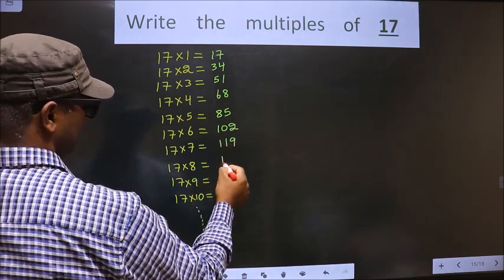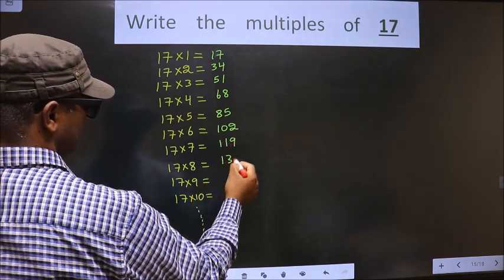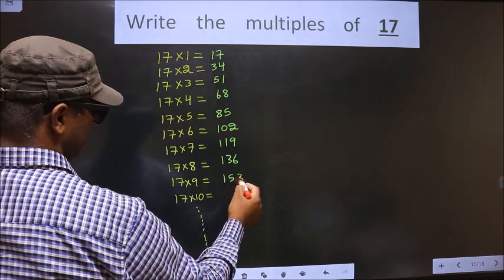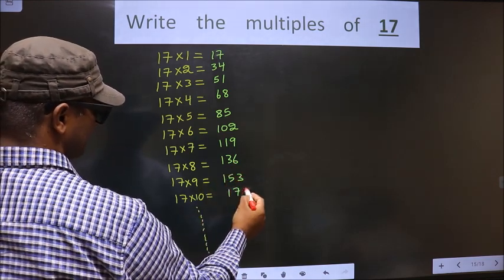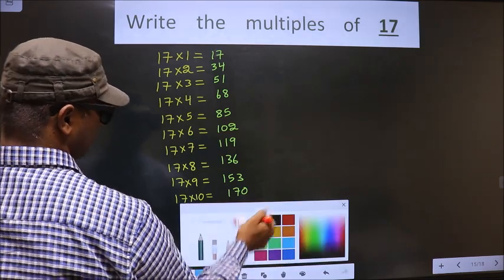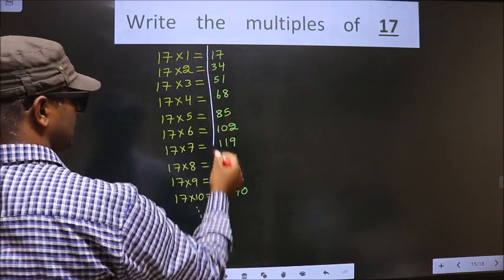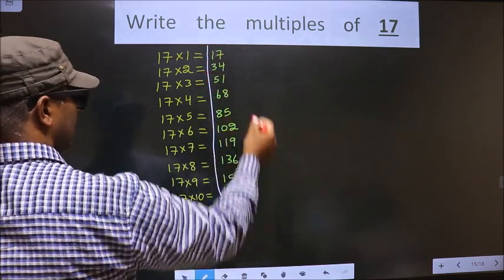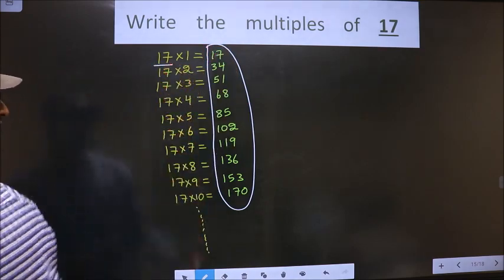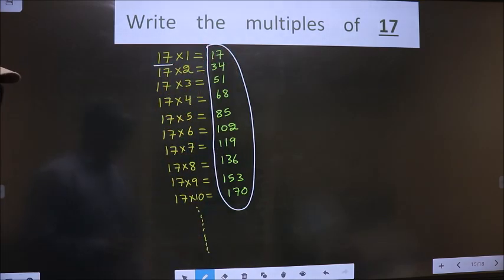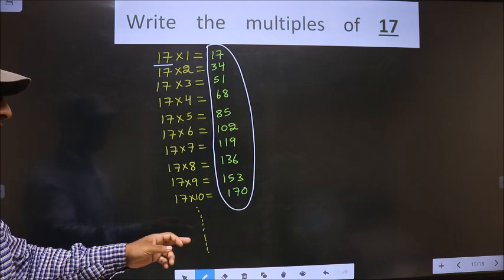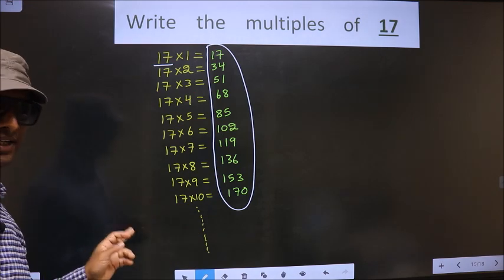17 into 8 is 136, 17 into 9 is 153, 17 into 10 is 170. So these numbers are the first 10 multiples of 17.